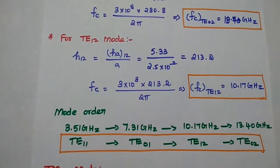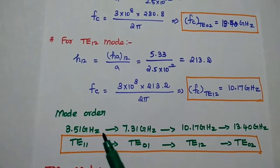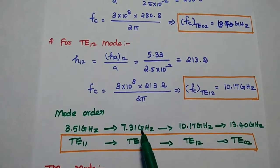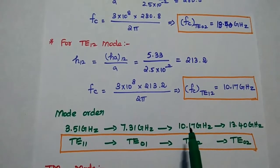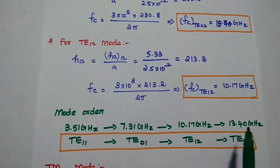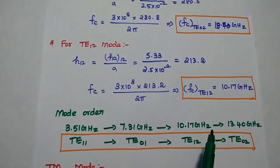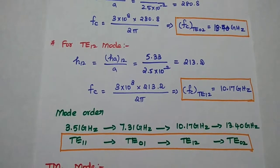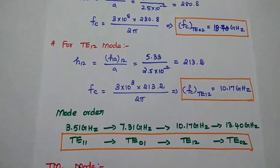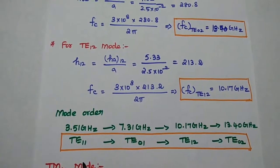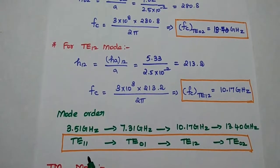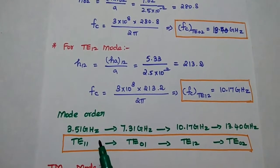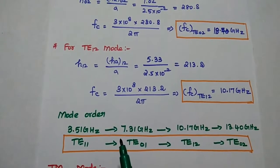From this calculation, we come to know the mode order. The lowest cutoff frequency is 3.51 GHz, the next is 7.31 GHz, then 10.17 GHz, and the last is 13.40 GHz. From these calculations, we can understand the order of the TE waves. The wave having the lowest cutoff frequency is known as the dominant mode. For this circular waveguide, TE11 is the dominant mode, having the lowest cutoff frequency of 3.51 GHz for the given diameter of 5 cm.